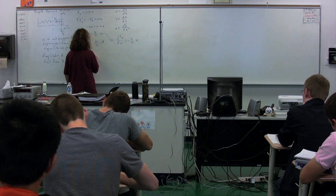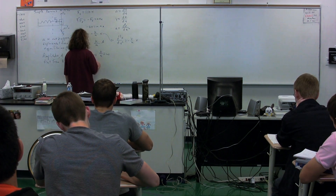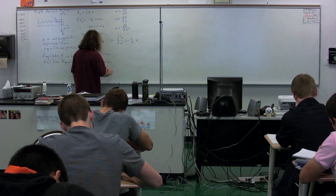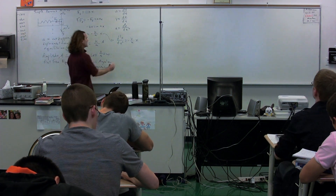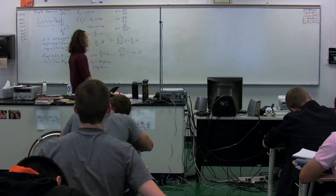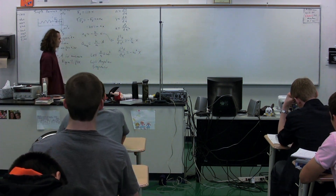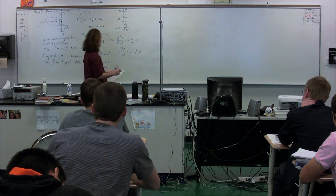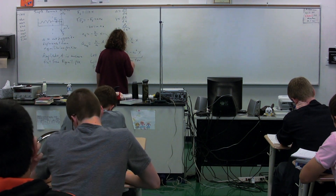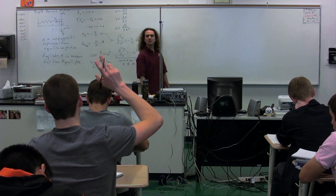We let k over m equal omega squared, where omega is called the angular frequency. So the second derivative of position as a function of time equals negative omega squared times x. This is the condition for simple harmonic motion. The second derivative of position as a function of time equals the negative of the angular frequency squared times x.